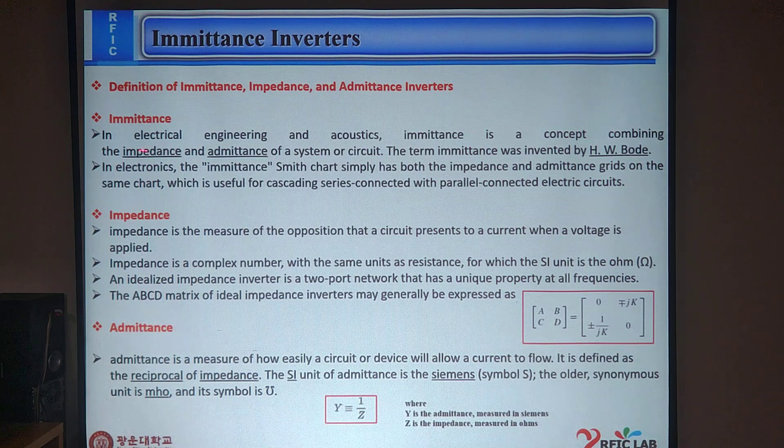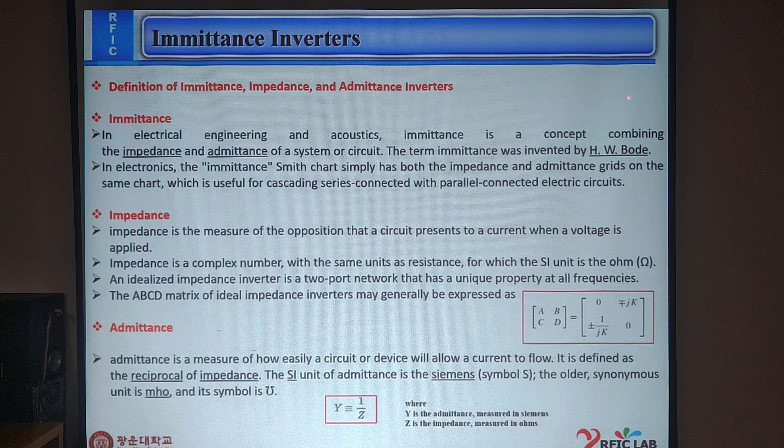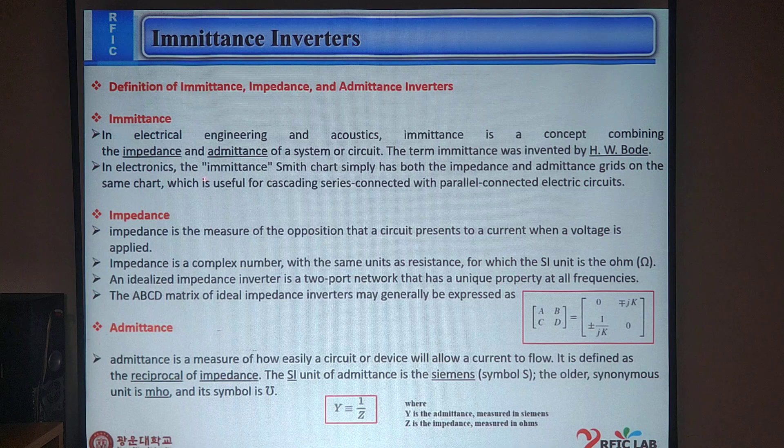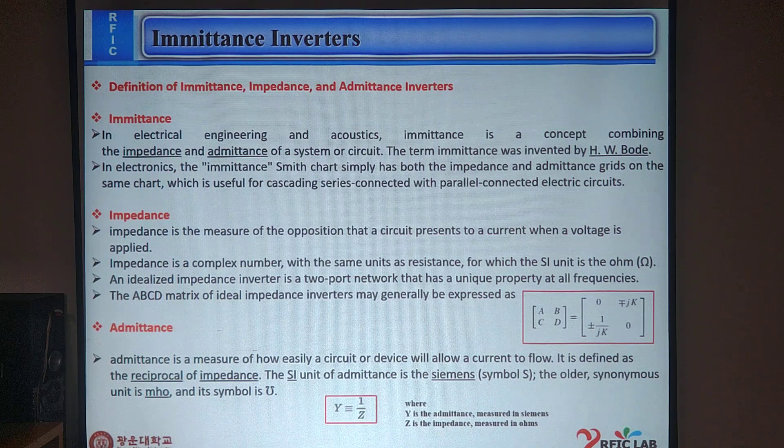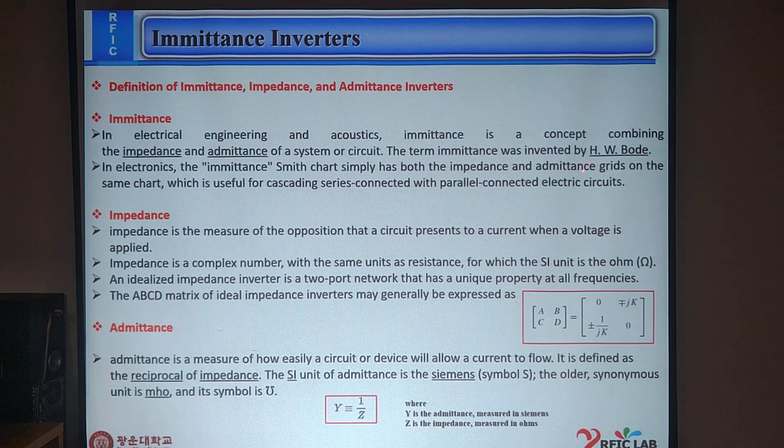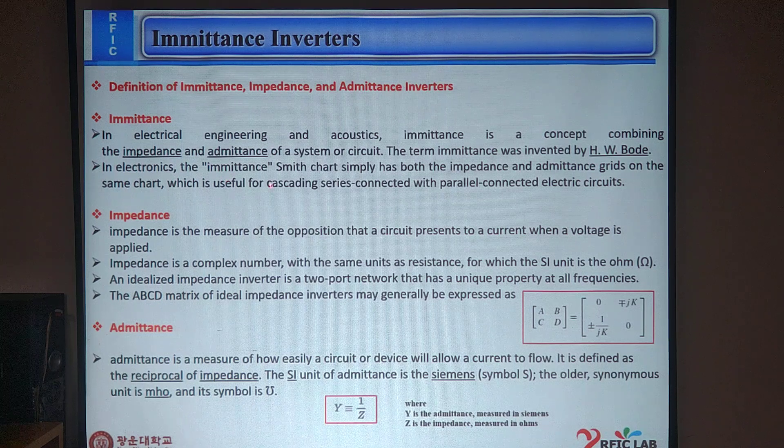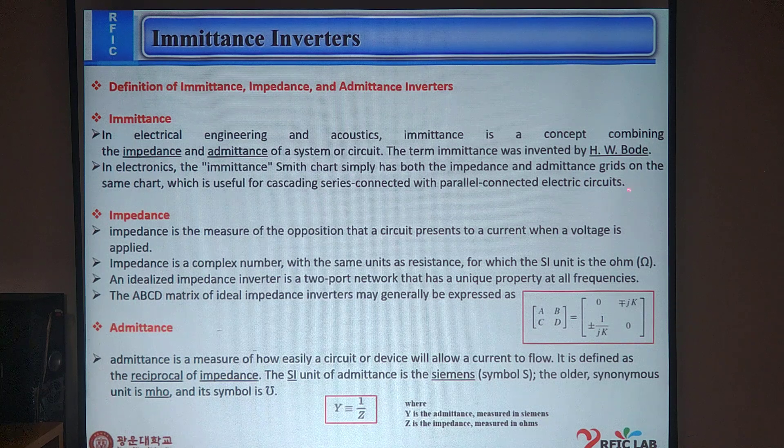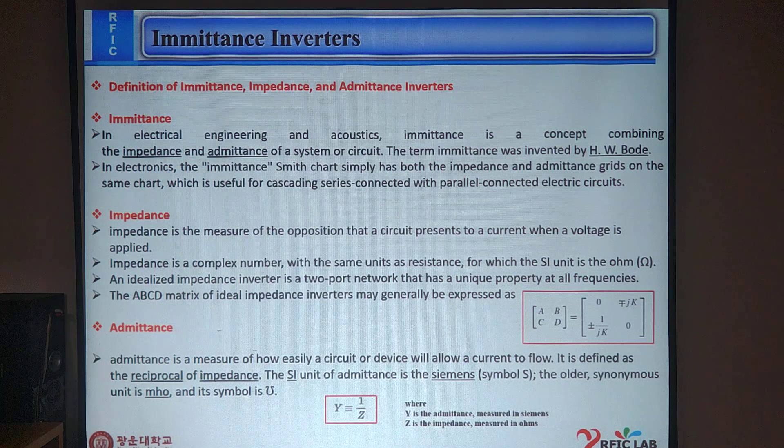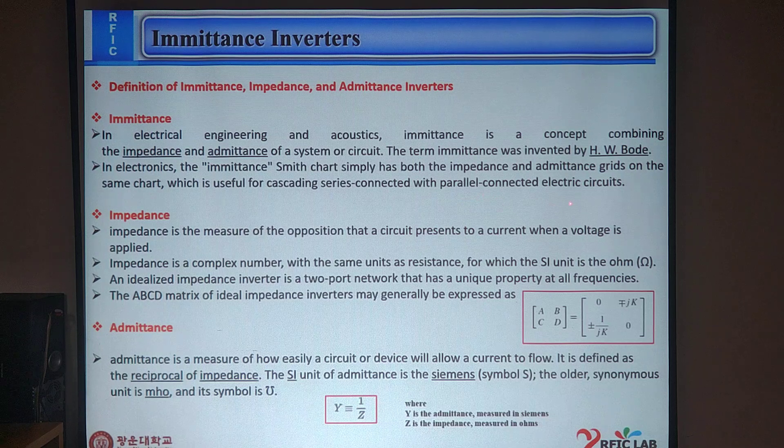Let's come to the Imittance. Imittance is Electrical Engineering and Acoustic Imittance, a concept combining the admittance and impedance of a system or circuit. The term Imittance was invented by H.W. Bode first time. In electronics, the Imittance Smith chart simply has both the impedance and admittance grids on the same chart, which is useful for cascading series connected with parallel connected electric circuits.